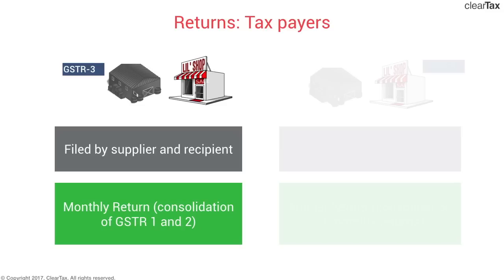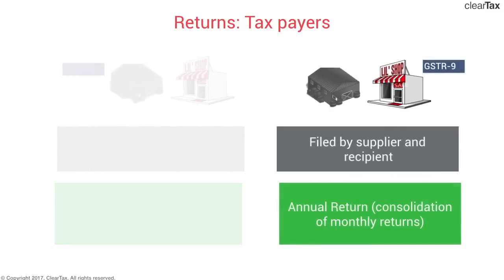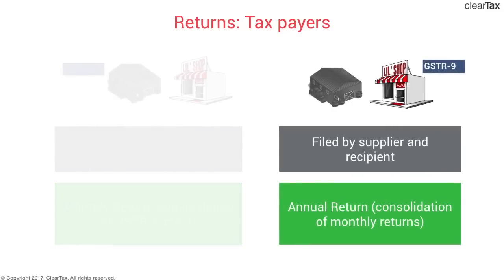So far in our discussion of returns for normal registered taxable persons, we've seen three returns: GSTR-1, 2, and 3. We've now come to the last of the returns for normal taxpayers — GSTR-9. This is an annual return filed by both supplier and recipient. It's a consolidation of all 12 monthly returns that the taxpayer files.